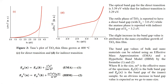This slide shows the Tauc plot of TiO2 thin films grown at 400°C. Figure 3C shows the direct transition and 3D shows the indirect transition. The optical band gap for direct transition is 3.39 eV while the indirect transition is 3.2 eV. The rutile phase of TiO2 is reported to have a direct band gap of 3.0 eV, while the anatase phase has an indirect band gap of 3.2 eV. The slight increase in band gap is attributed to the nanocrystalline nature of the TiO2 thin film.